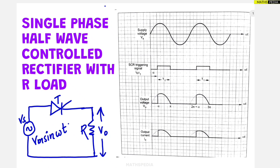Proceeding further, we have to derive two main things. First thing is Vout average — that means the average value of output voltage — and the RMS value of output voltage. From that directly we can get the current also: I average as well as I RMS. Starting with the average output voltage.